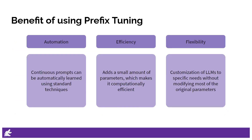Unlike hard prompt tuning, prefix tuning is amenable to automation. Continuous prompts can be automatically learned using standard techniques, making it easier to apply prefix tuning to different tasks without manual prompt engineering. Prefix tuning is considered a parameter-efficient method for fine-tuning LLMs, adding only a small amount of parameters, which makes it computationally efficient. It allows for the customization of LLMs to specific needs without modifying most of the original parameters, offering the ability to leverage cutting-edge models without building one from scratch. This makes it well-suited for real-world applications where resources may be limited and the need to adapt quickly to different tasks is essential.